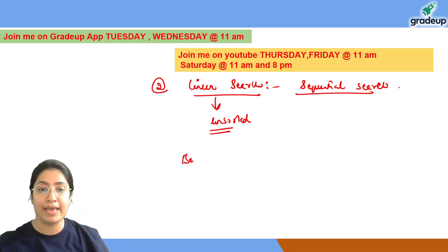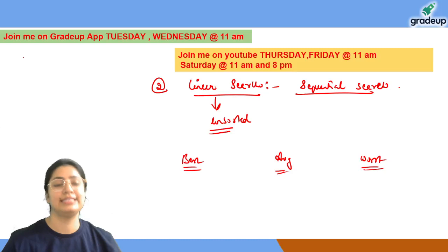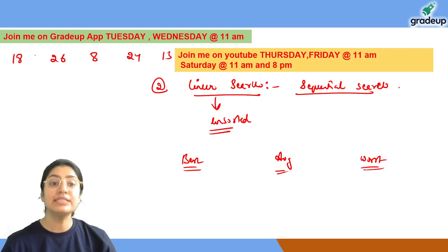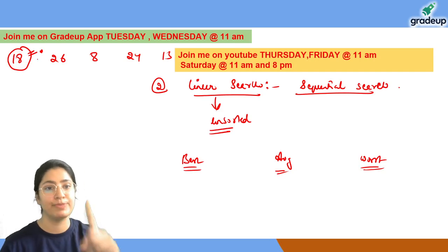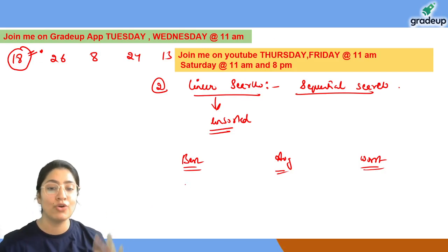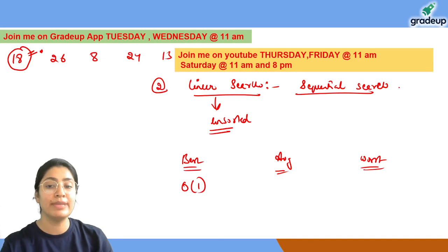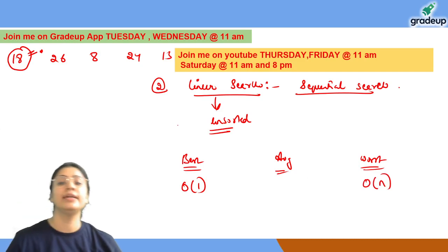We check best case, average case, and worst case complexity for linear search. Let's say I have unsorted data: 18, 26, 8, 24, 13. Best case: I am searching for element 18 and I find it at the first place. That is the best case complexity, which is a constant amount of time — O(1). The worst case is when you have to scan the entire list, which is O(n).